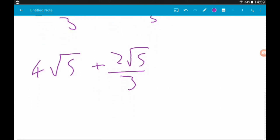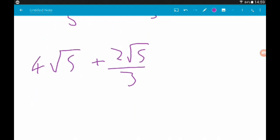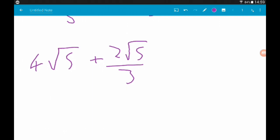So, this is the same. Let's say now, we've got 4 root 5 and 2 thirds root 5. We've got 4 and 2 thirds lots of root 5.